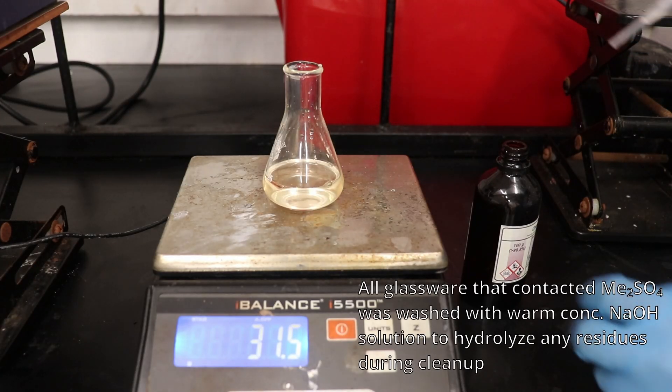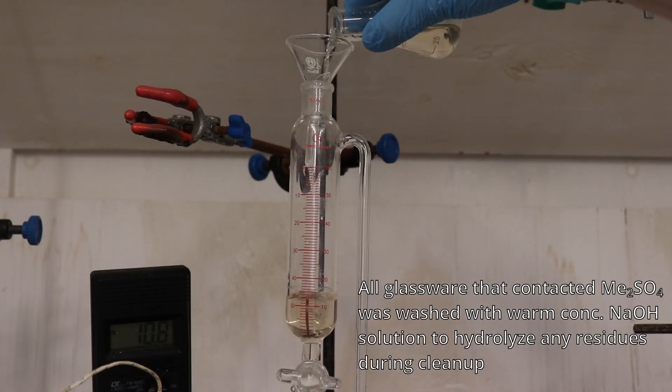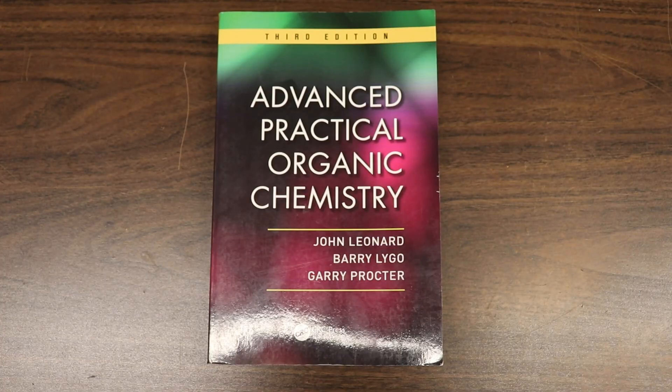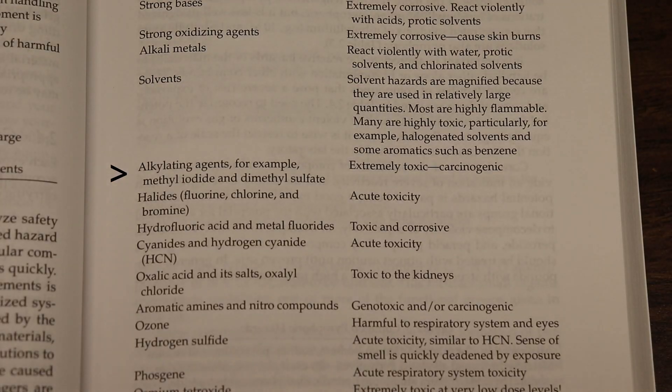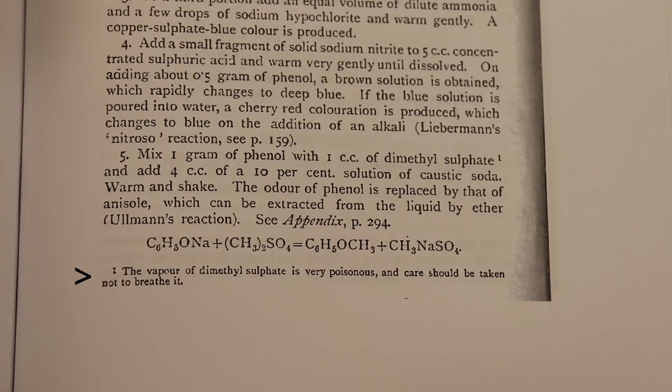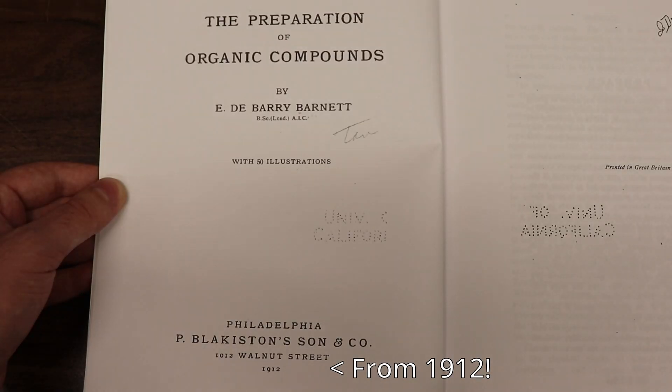Next, 31.5 grams of the extremely toxic dimethyl sulfate is weighed out and added to the addition funnel. If you choose to work with dimethyl sulfate, you need to be very aware of the risks that it carries, especially the non-obvious ones, such as its ability to build up to lethal concentrations in air at room temperature, which necessitates the use of a fume hood.